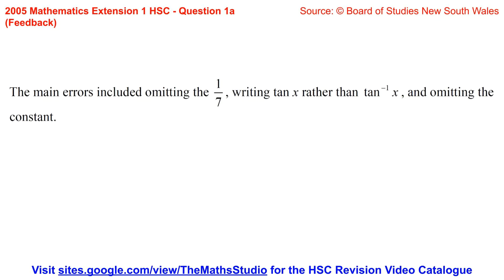The feedback from the marking center for question 1a: The main errors included omitting the 1 over 7, writing tan x rather than inverse tan x, and omitting the constant.